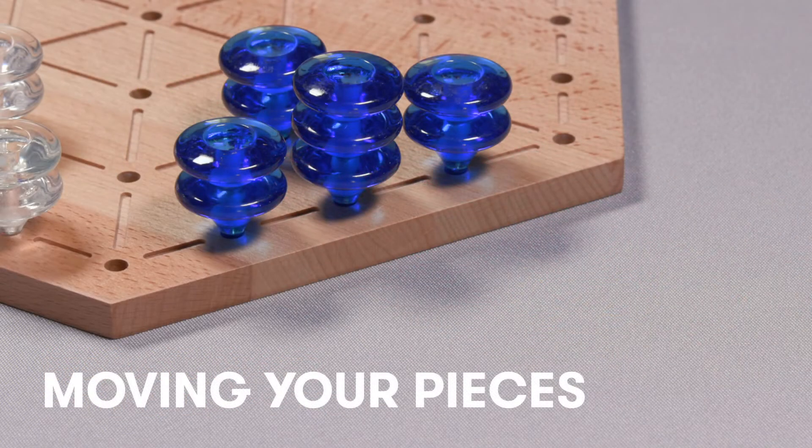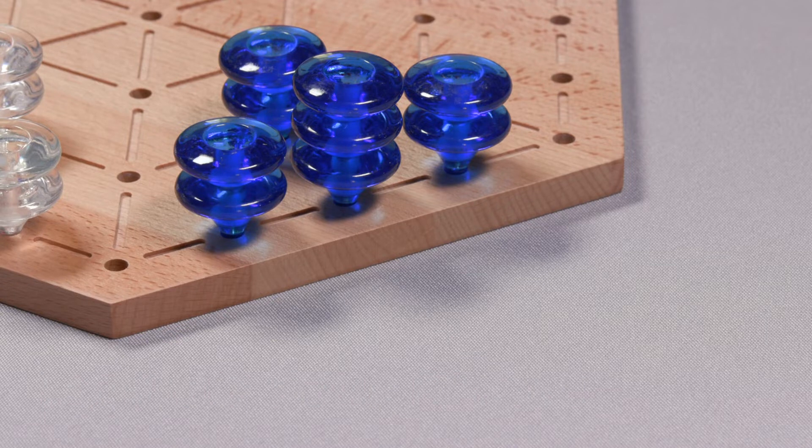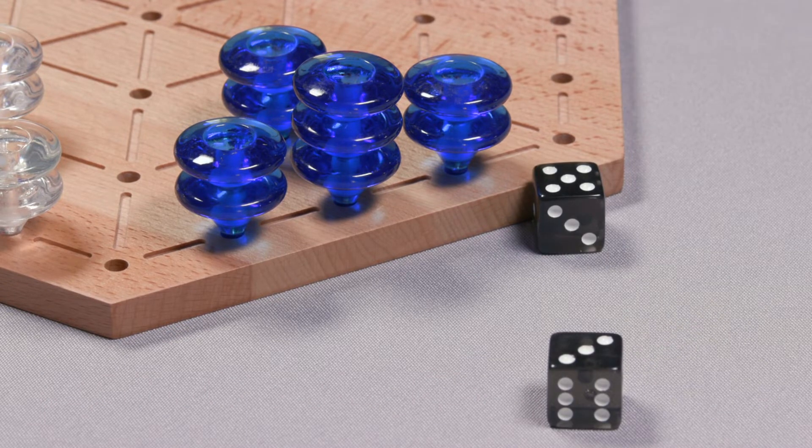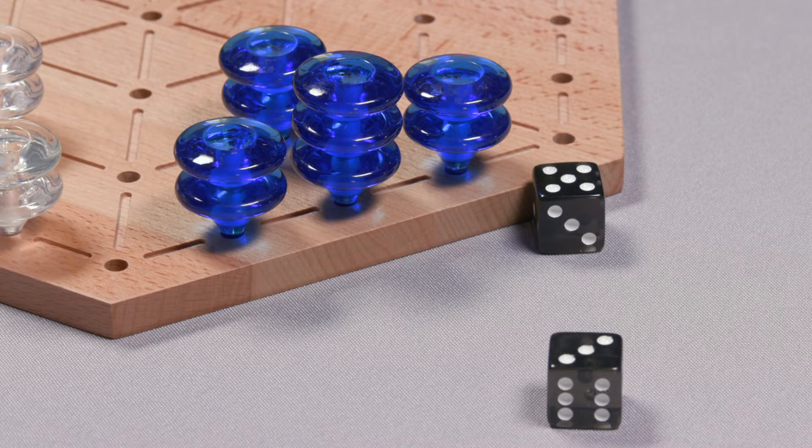On your turn, roll both dice. Each die represents a separate move option. You may choose the order in which you want to use the dice roll.